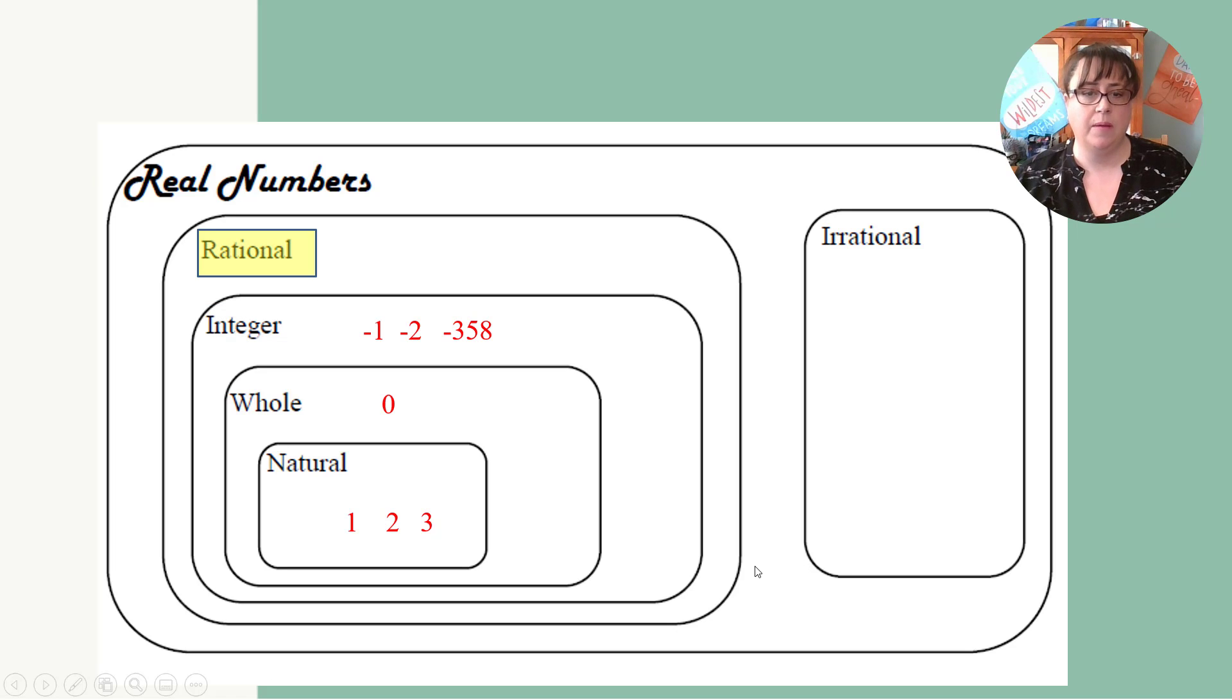A rational number includes all of these plus these. One half, negative two thirds, 2.25, 0.333. Why is it 0.333? Because 0.333 is one third.